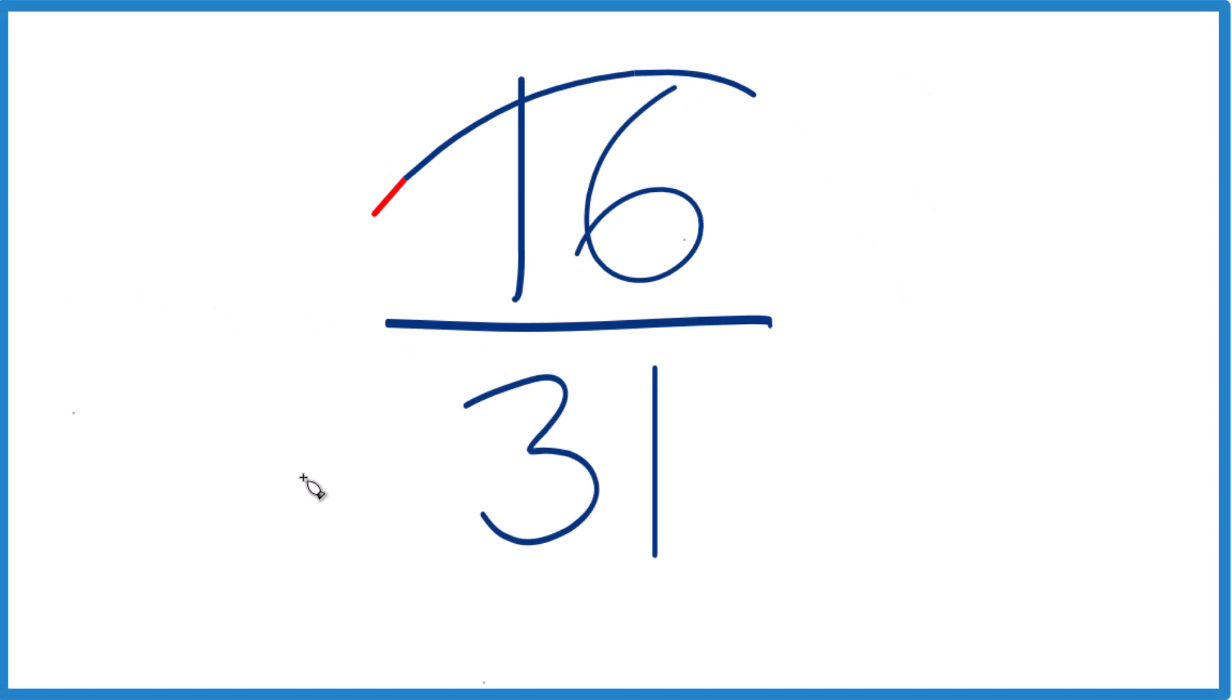Let's simplify the fraction 16/31. What we want to do is reduce 16 over 31 down to lowest terms. We want to simplify it.